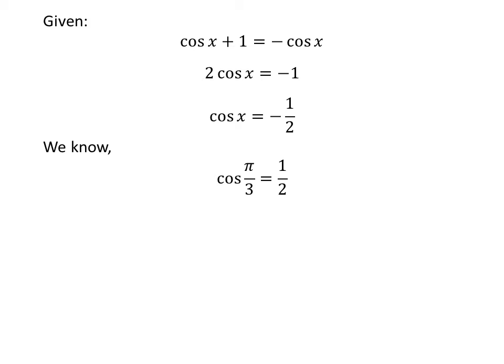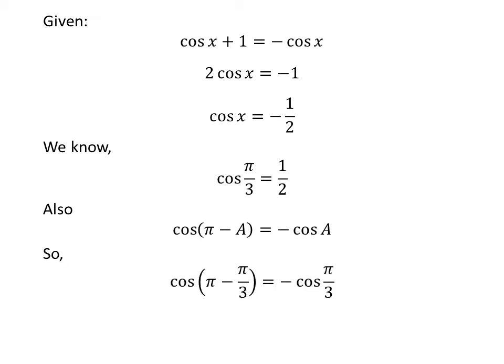We know the value of cosine of pi upon 3 is half. We also know the trigonometric identity cosine of pi minus a is equal to minus cosine of a. Applying this identity gives us cosine of pi minus pi upon 3 is equal to minus cosine of pi upon 3. Since pi minus pi upon 3 equals 2 times pi upon 3, and plugging in the value of cosine of pi upon 3 gives us cosine of 2 times pi upon 3 is equal to minus half.